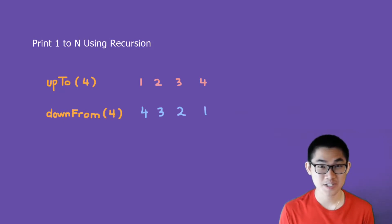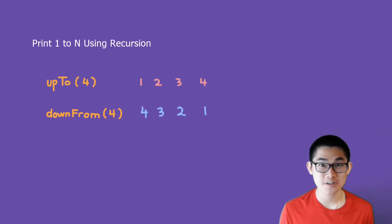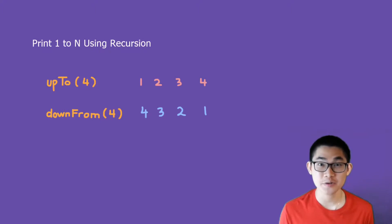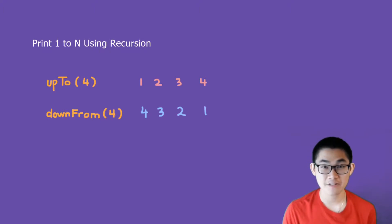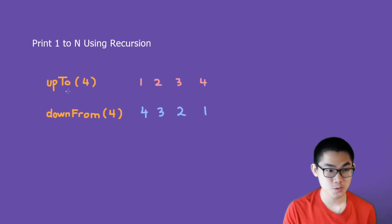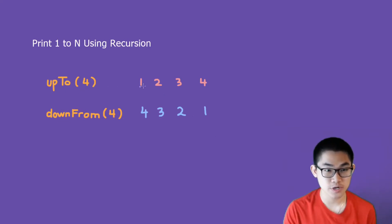In this video, I'm going to show you how to print from 1 to n using recursion. We'll take a look at the code at the end of the video. So let's say we have a function called upTo(n), and if n is 4, then it's going to print out 1, 2, 3, 4 using recursion.